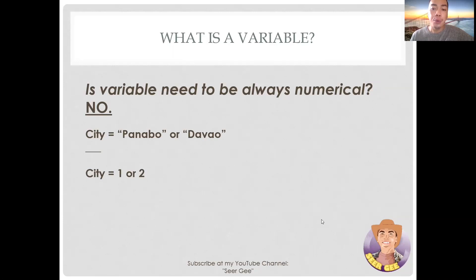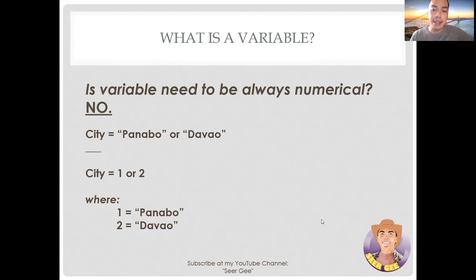Thus, we can label or assign a number to indicate the value it should hold, just like 1 for Panabo or 2 for Gabaw. We will discuss further about this on my next topic which is about types of data, wherein I will emphasize the levels for measuring a variable.